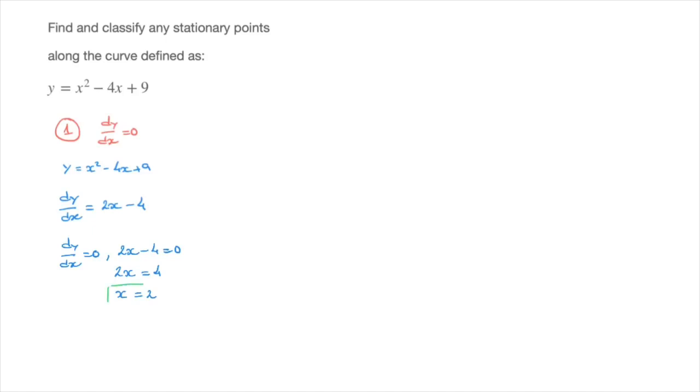Now this x equals 2 tells us that the curve has one stationary point whose x-coordinate is 2. And for the sake of being able to claim that we've actually found the stationary point, we need to calculate its y-coordinate. And for that, we replace every x we see inside our function by the value of x we just found, which was 2. I'll do my working at the bottom here.